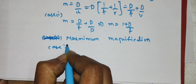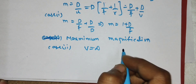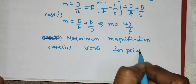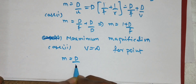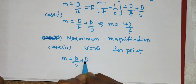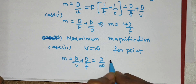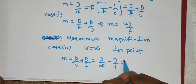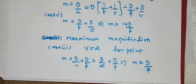For normal adjustment with V = infinity: M = D/F + D/V = D/F + D/∞. Since anything divided by infinity equals zero, the D/V term vanishes, giving M = D/F.